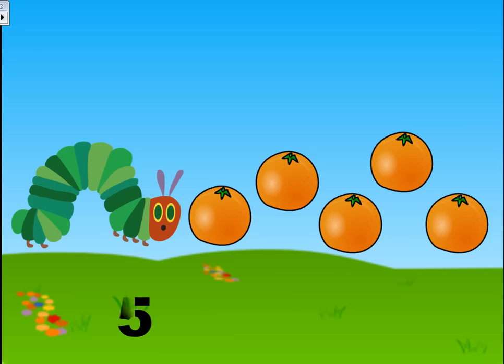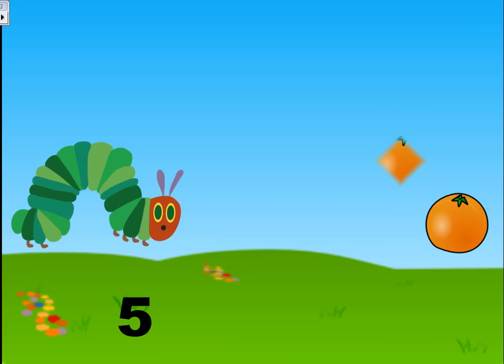Now he's going to eat some. One, two, three, four, five. He was really hungry, so he ate all of the oranges. So we minus five.